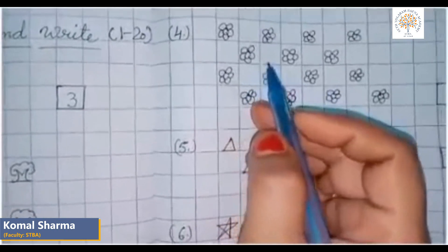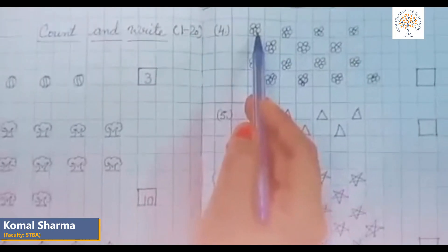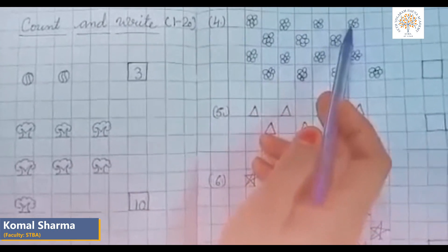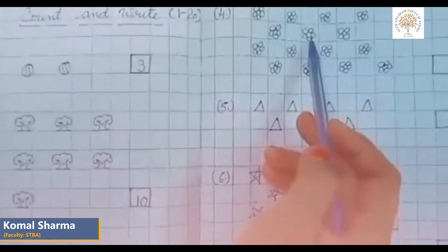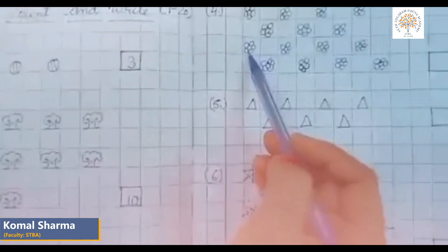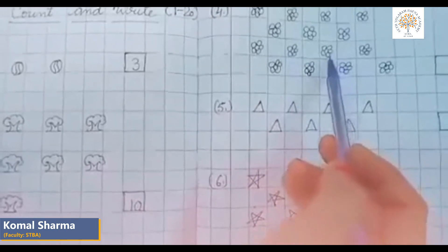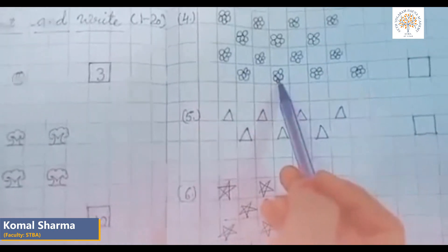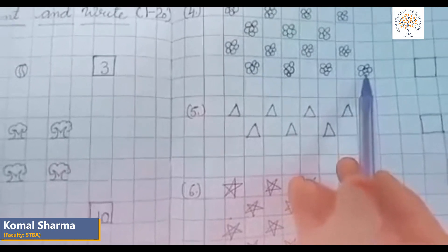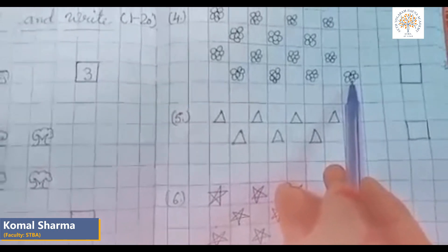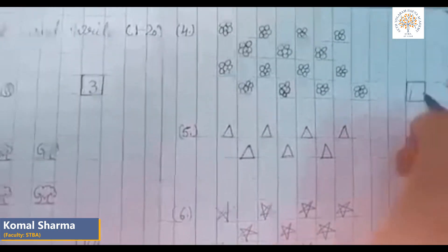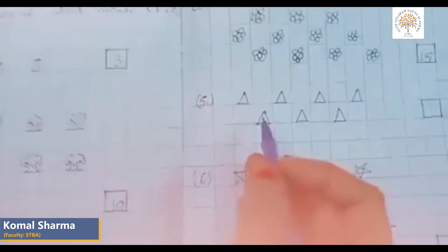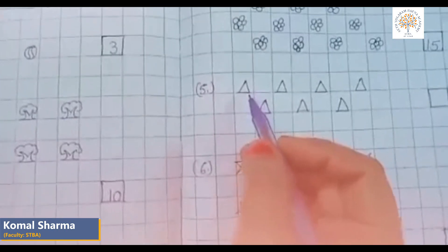Now count the pictures of flowers: one, two, three, four, five, six, seven, eight, nine, ten, eleven, twelve, thirteen, fourteen, fifteen. There are fifteen pictures of flowers. So we will write fifteen here — one, five, that is fifteen.